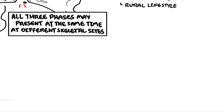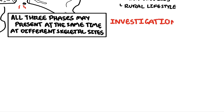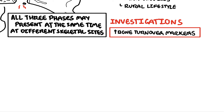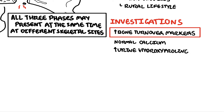Investigations in Paget's disease importantly include bone turnover markers, which will be increased. We discussed ALP — alkaline phosphatase. Interestingly, calcium levels are normal. You can also check the urine for hydroxyproline, which may be increased in people with Paget's, indicating increased bone lysis or breakdown.